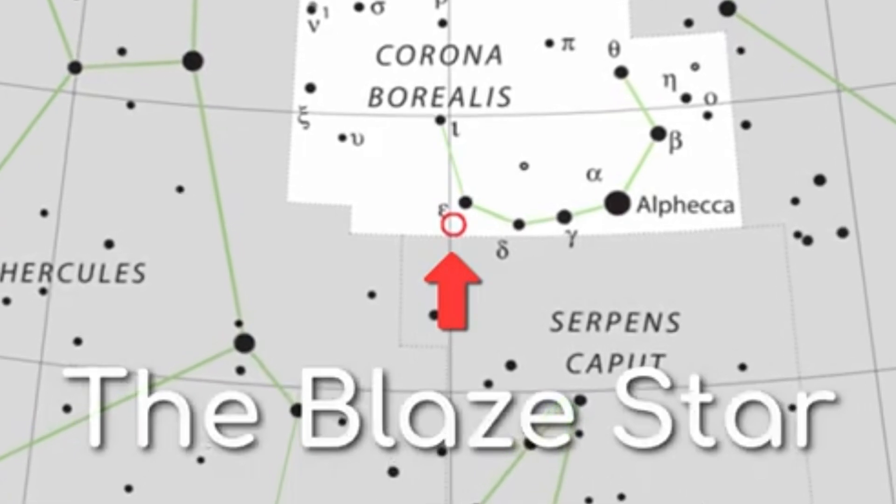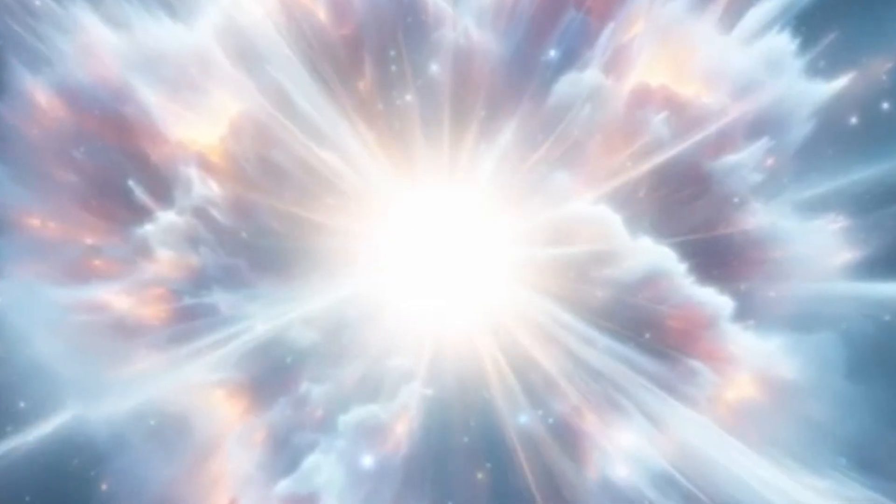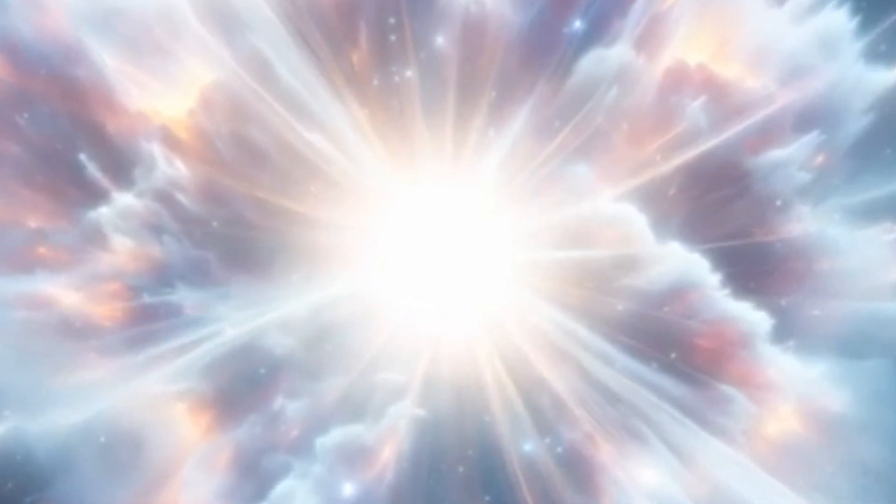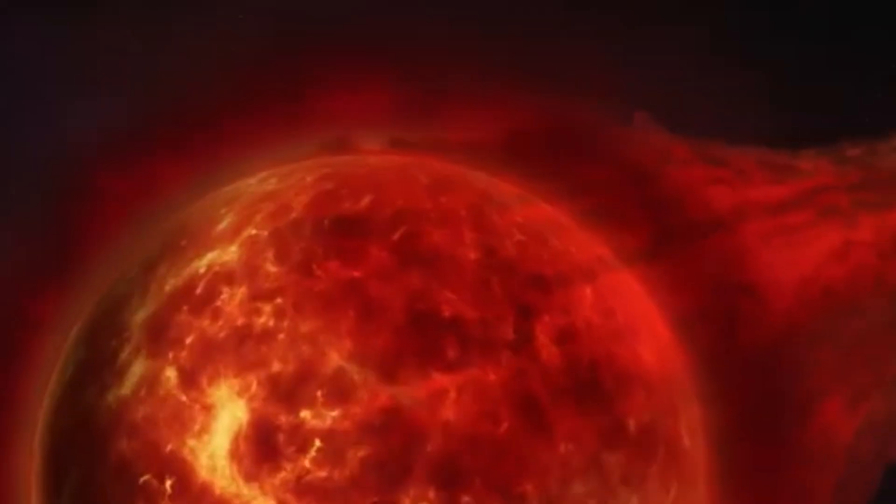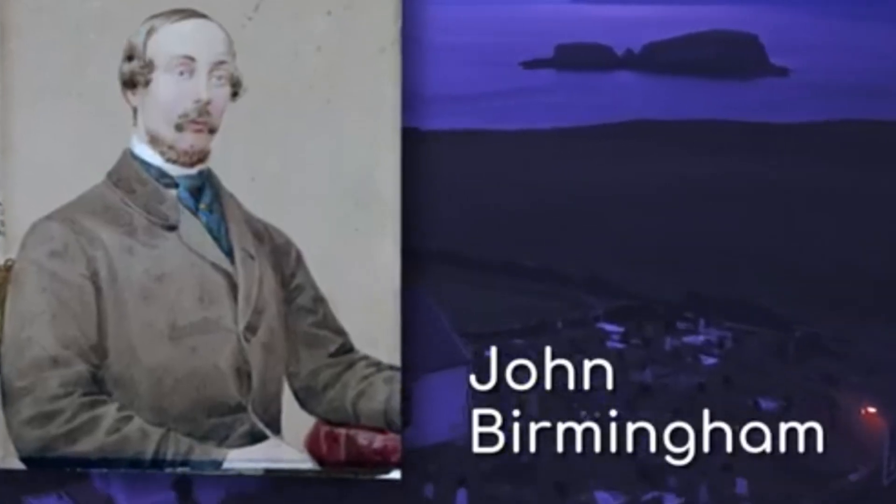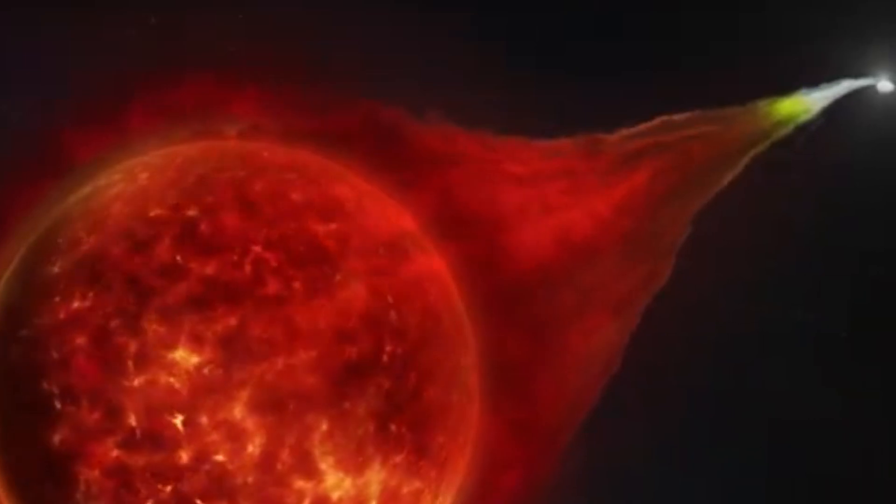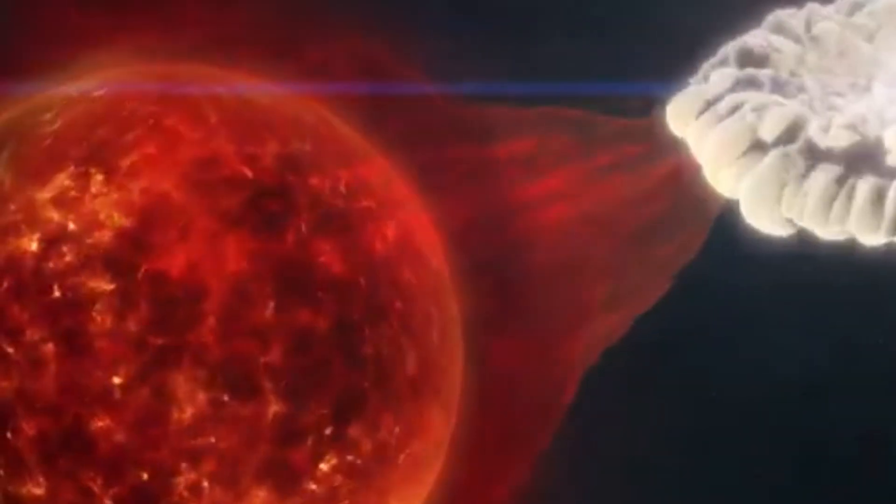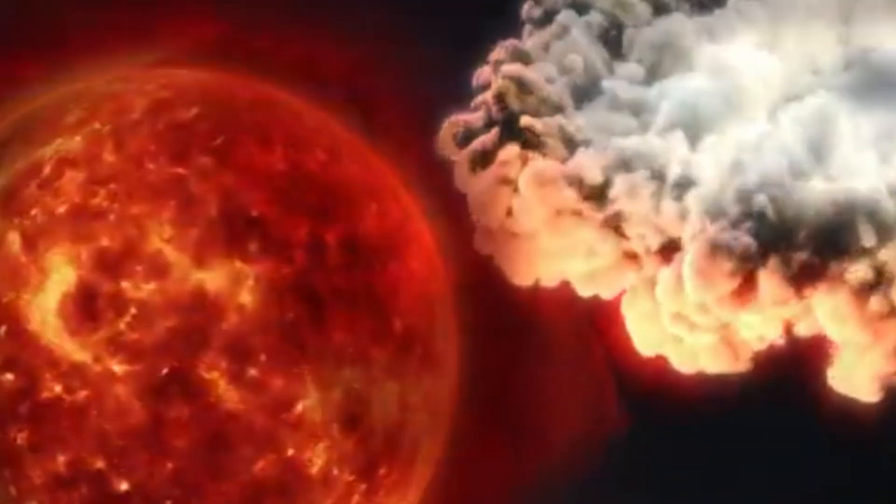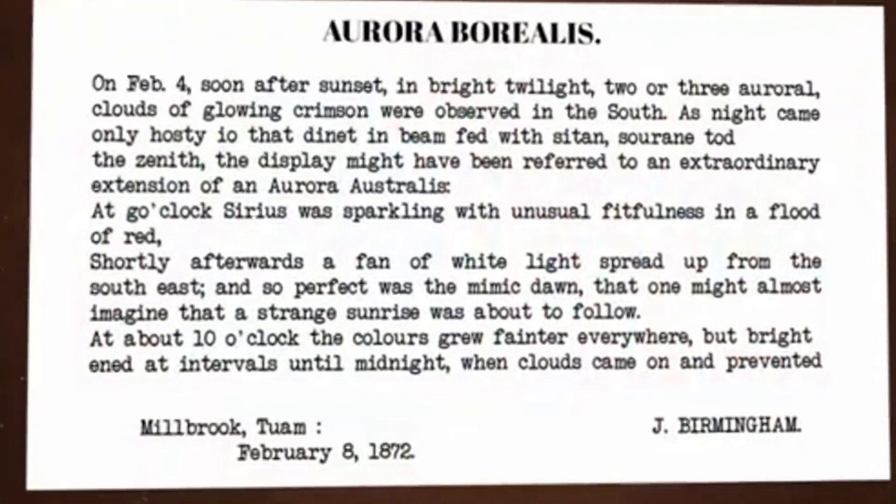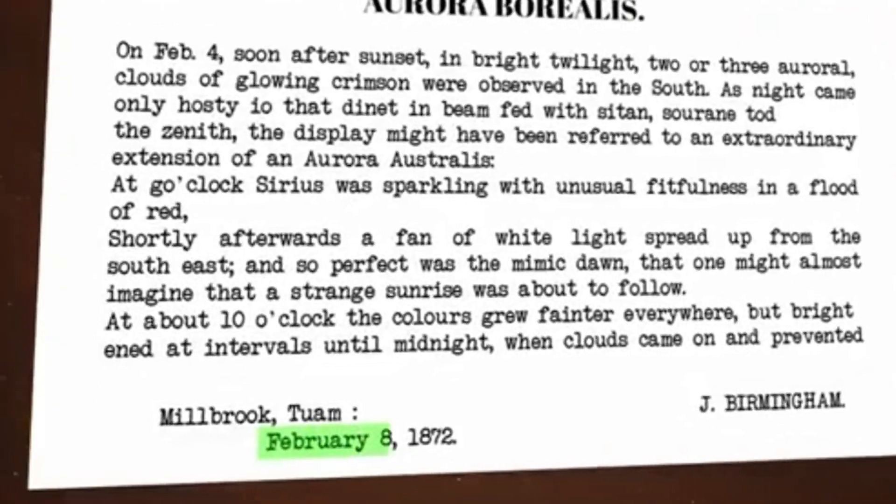The story of the Blaze Star begins on a partly cloudy night in May of 1866, under the skies of western Ireland. Amateur astronomer John Birmingham, on his usual evening walk, glanced up at the familiar constellations dotting the night sky. Pausing as he reached the Northern Crown, he noticed something extraordinary: a bright new star had emerged in this well-known constellation.